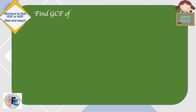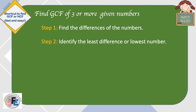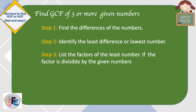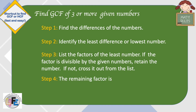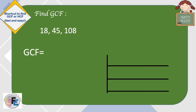Now let's find the GCF of three or more given numbers. Let's find the GCF. The first step is to find the differences of the numbers, and then find the least difference or lowest number.